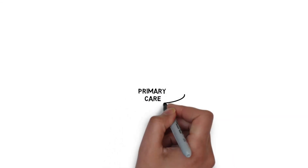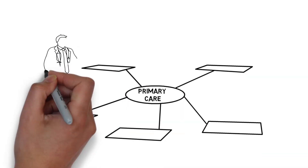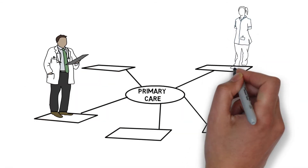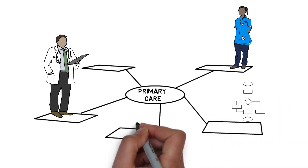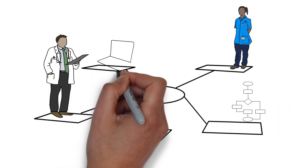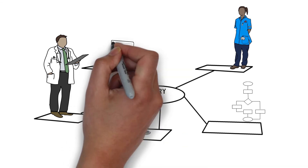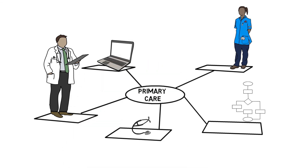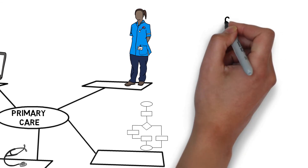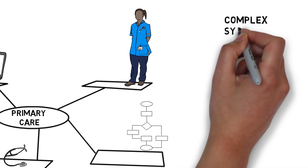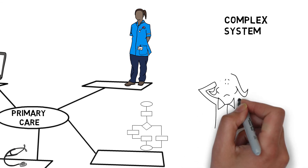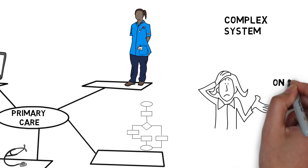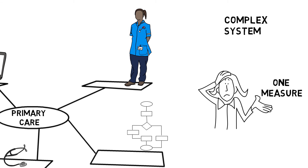Primary care is a system, described in the improvement guide as an interdependent group of people, procedures and equipment working together towards a common purpose. The common purpose brings the parts of the system together, while the interdependence is the glue that forms the relationships and interactions among the parts. It is highly unlikely that one measure can help us understand such a complex environment as primary care. Therefore, multiple measures are necessary to understand and evaluate the impact of the changes we make to our system.